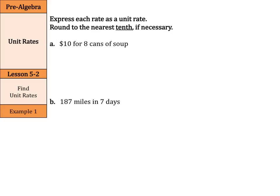Let's continue. Express each rate as a unit rate. Round to the nearest tenth if necessary. $10 for 8 cans of soup. Well, start with $10 over 8 cans. We need our bottom to be 1 can.